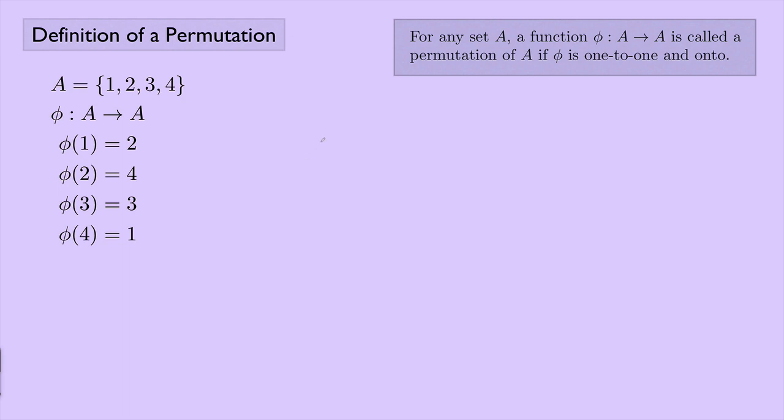So start by taking a bracket, and we're going to have two rows of numbers here. And on the top row you're going to write all of the things in the set A. So we have 1, 2, 3, and 4. And we're going to close the bracket. And on the bottom you're going to write everything that these numbers are mapped to. So we see that phi of 1 is mapped to 2. So underneath the 1 I'm going to write a 2.